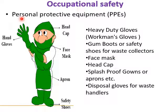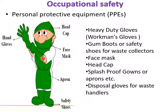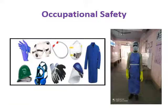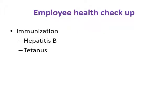Occupational safety is very important. Those handling biomedical waste must have personal protective equipment: heavy-duty gloves, gum boots or safety shoes, face mask, head cap, splash-proof gowns or aprons, and disposable gloves for waste handlers. All employees involved must undergo complete health checkups. Immunization must be ensured, particularly against Hepatitis B and Tetanus.